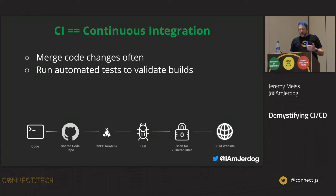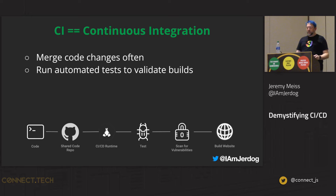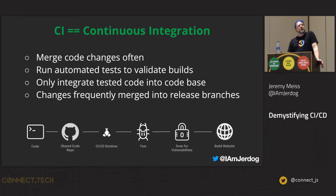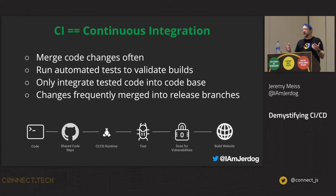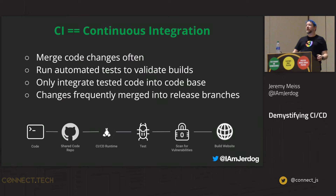So: merge often, run automated tests to validate the builds. As developers merge code base changes often, we want to run automated tests to validate those builds. Only tested code is integrated into the code base, and changes frequently get merged into release branches. Continuous integration gets you speed — once you write code and push it, upstream automation takes over and validates all those builds, ensuring you're only pushing quality code into production branches.